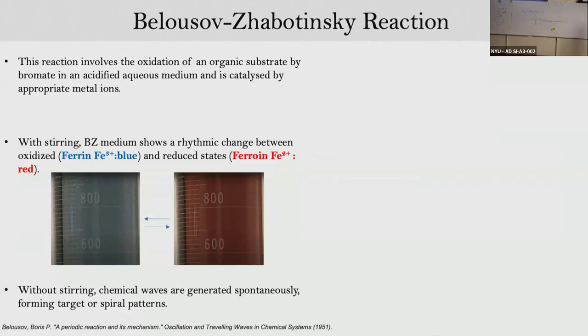When your solution is in blue, the metal catalyst is in the oxidized state - you have mostly Fe3+ ions. When it is red, you have Fe2+ ions - the ferroin state. This cycle repeats as the system oscillates between oxidized and reduced states.